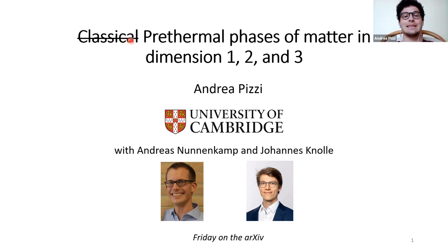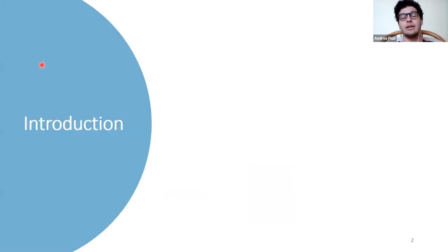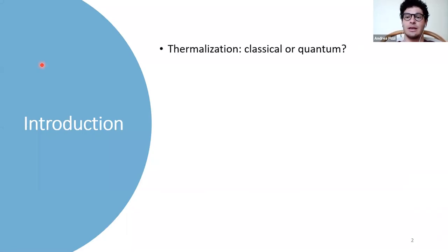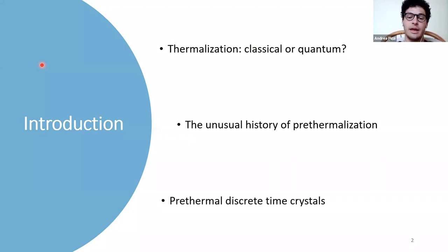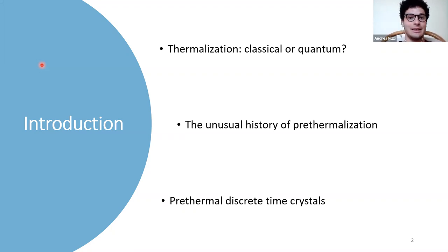The 'classical' in the title has a bar on top, and we will address that very soon. The introduction will first consider the issue of classical versus quantum, taking thermalization as an example — a good warm-up before moving to pre-thermalization and its unusual history, and then a brief overview of pre-thermalization, discrete time crystals, and pre-thermal discrete time crystals.